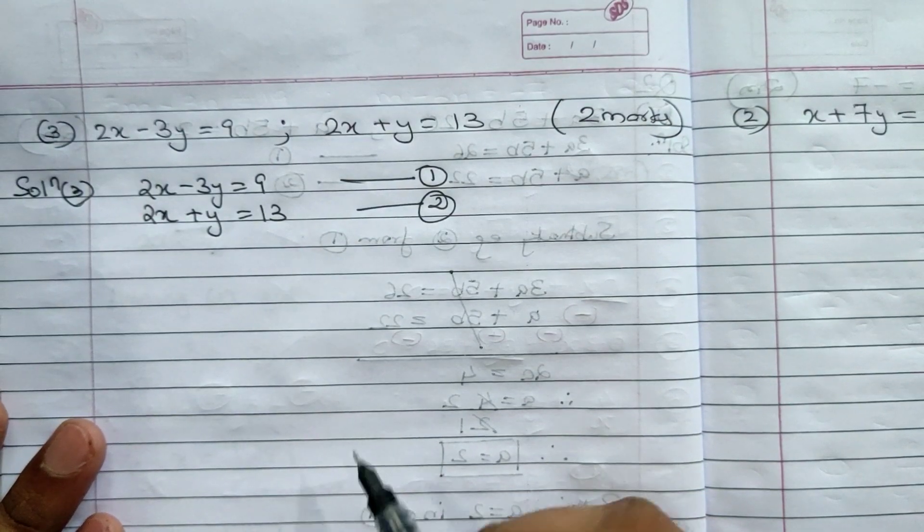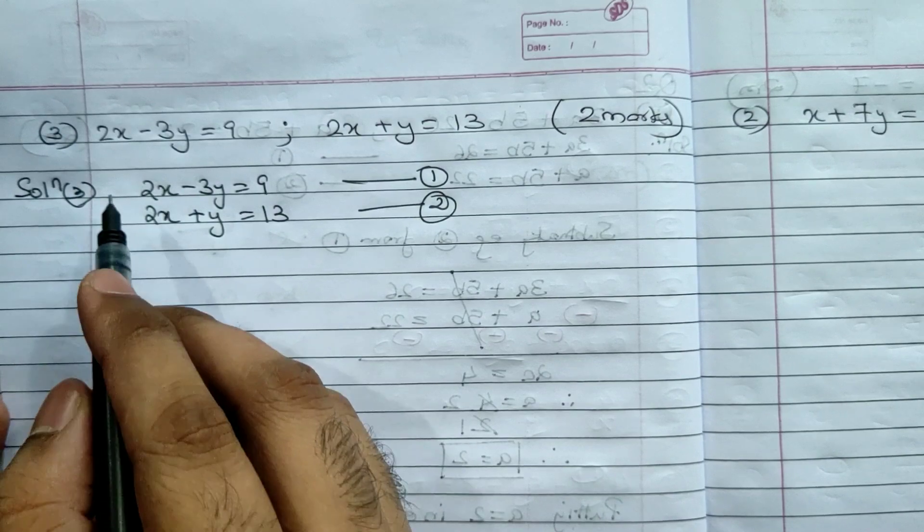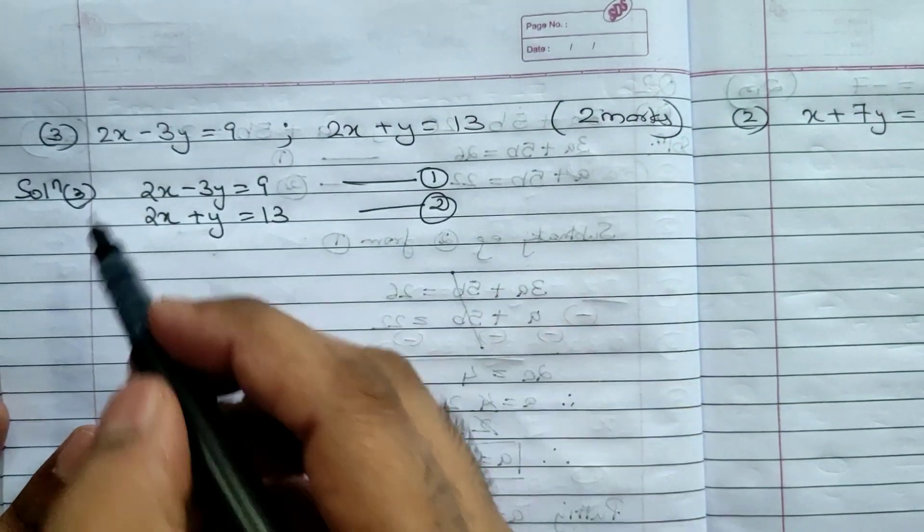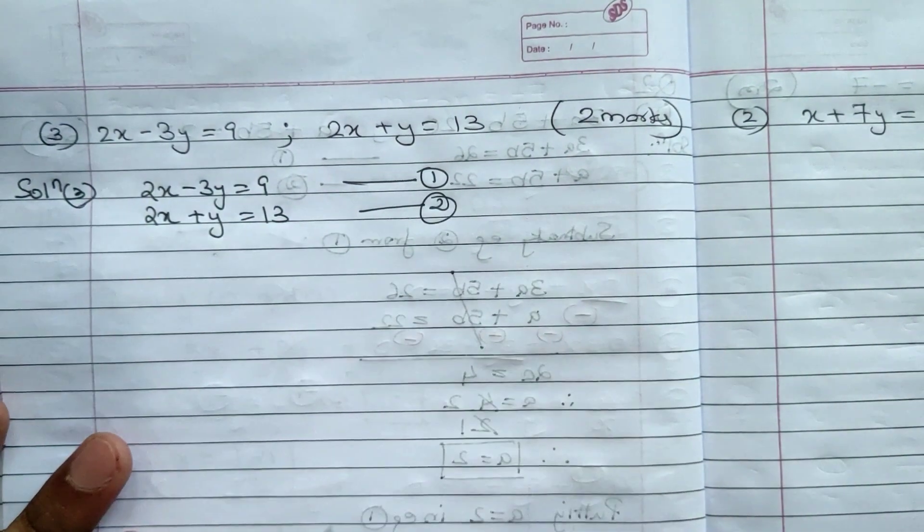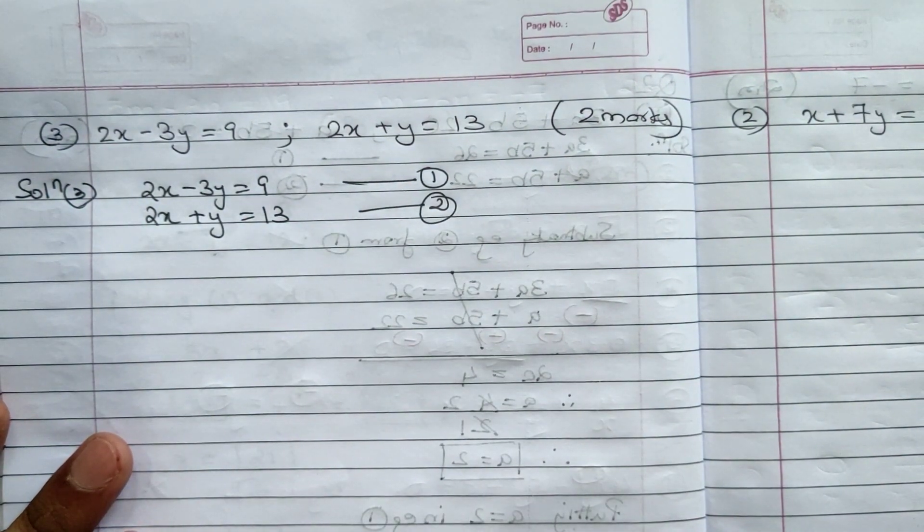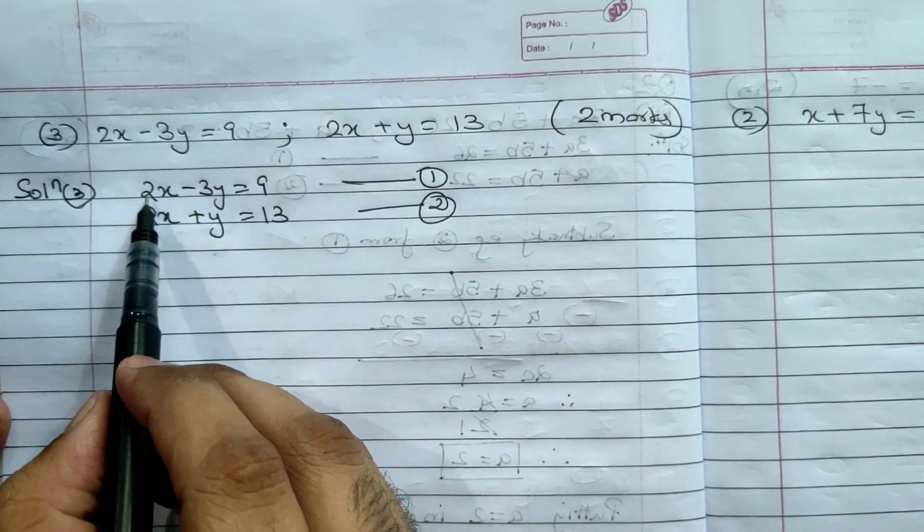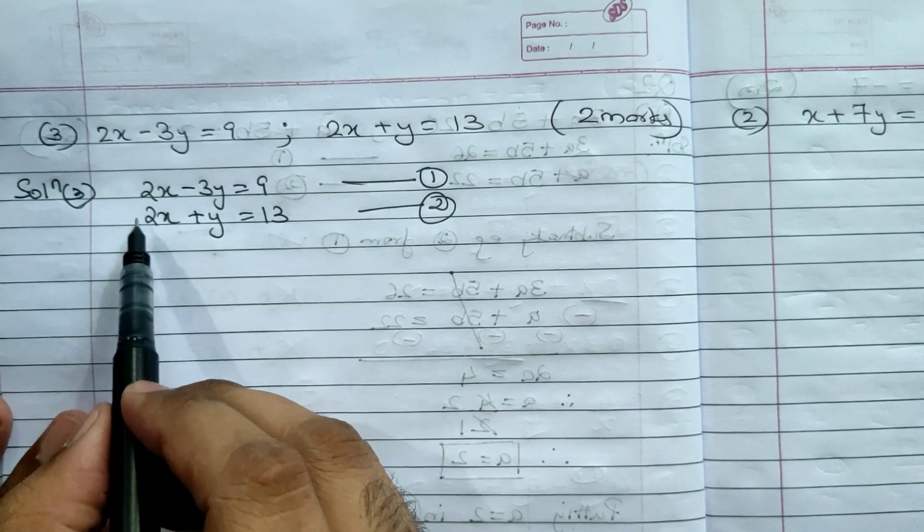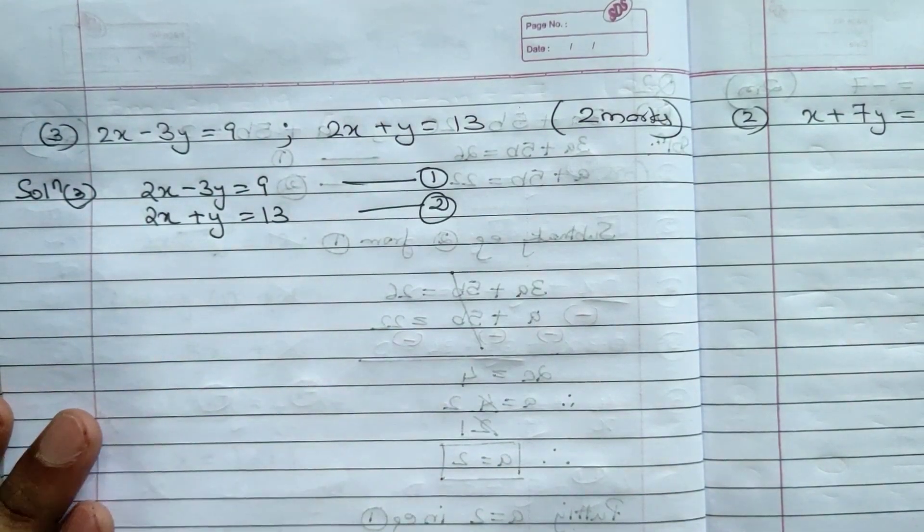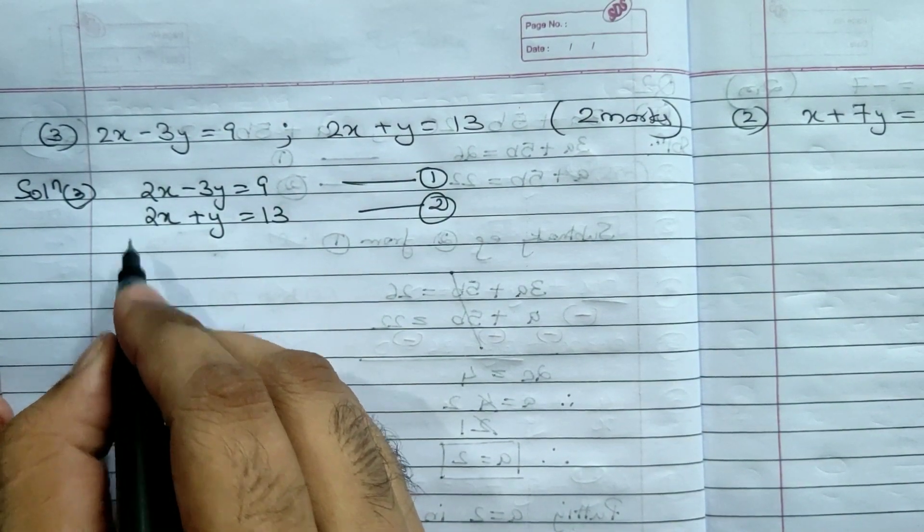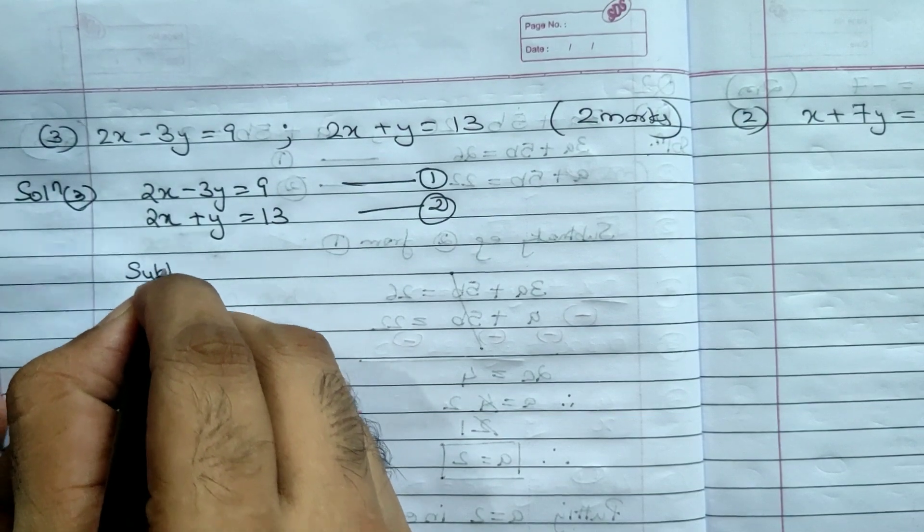First step - solution. I will write the equation as it is. 2x minus 3y equals 9, equation number 1. 2x plus y equals 13, equation 2. Looking at coefficients - here x is 2x, here x is 2x. So x coefficient is same, so we can eliminate x.